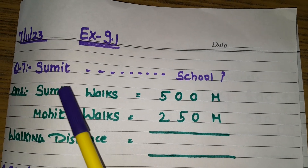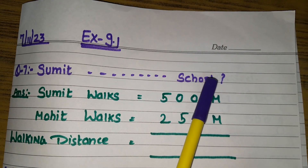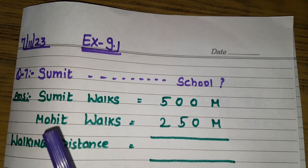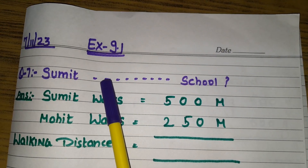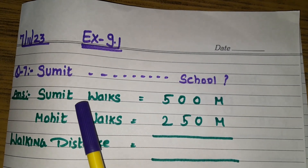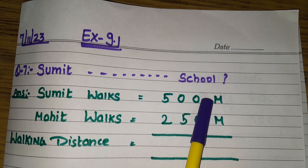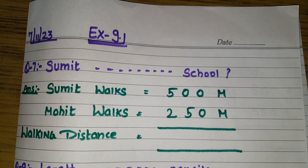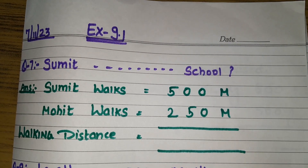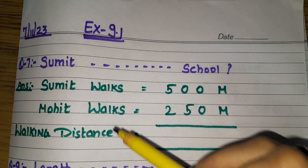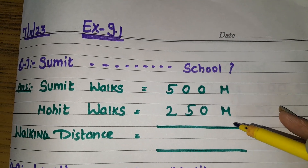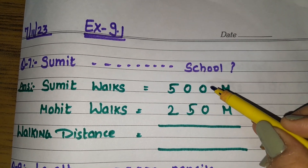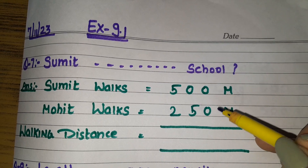Answer: Sumit walks 500 meters, Mohit walks 250 meters. When you talk about the distance, since Mohit's walking distance is less, we will subtract. So Sumit's walking distance minus Mohit's walking distance.